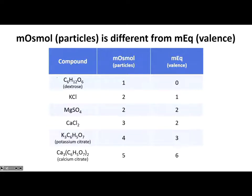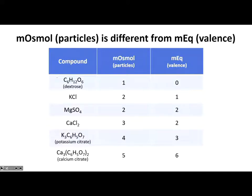Magnesium sulfate, MgSO4, splits into one magnesium and one sulfate — two particles. But the charge on magnesium is plus two and the charge on sulfate is minus two. So you get two milliequivalents because of the valence. Two particles, two milliequivalents — in this case the numbers happen to match, but for different reasons.